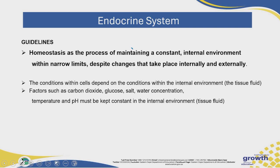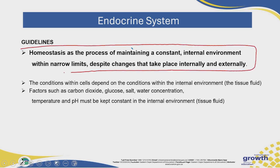Your guidelines describe homeostasis as a process of maintaining a constant internal environment within narrow limits despite changes that take place internally and externally. Make sure that you study that definition. The conditions within the cells depend on the conditions within the internal environment. Factors such as carbon dioxide, glucose, salt, water concentration, temperature, and pH must all be kept constant in the internal environment because all these factors will affect how the cells are able to function.